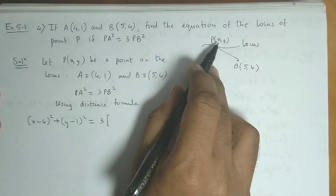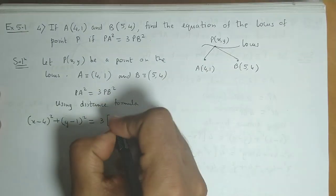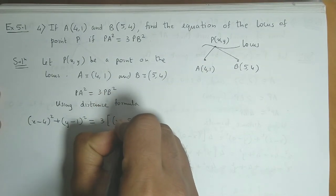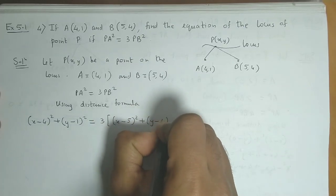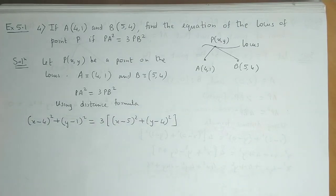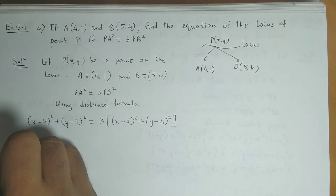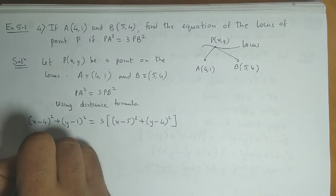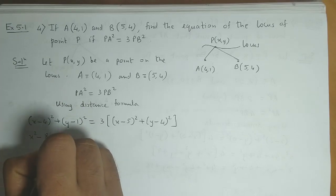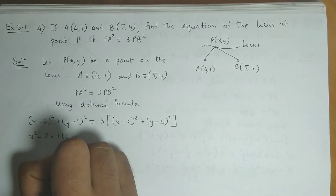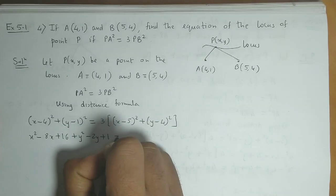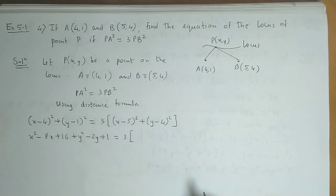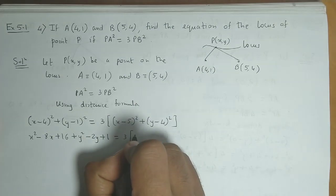Now PB squared is x minus 5 the whole square plus y minus 4 the whole square. So let us expand this. We get x squared minus 8x plus 16 plus y squared minus 2y plus 1.